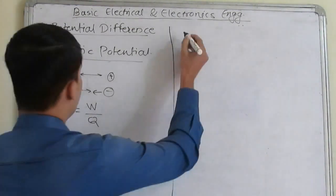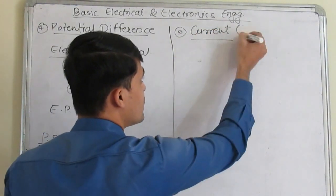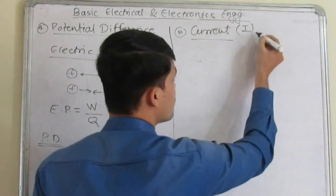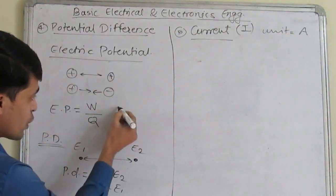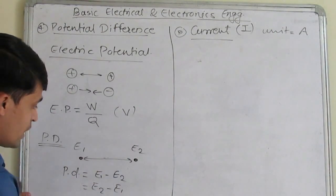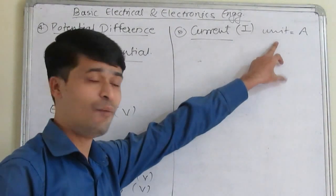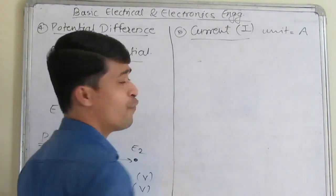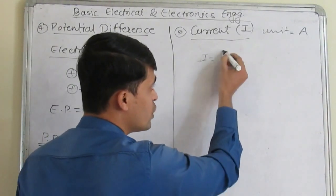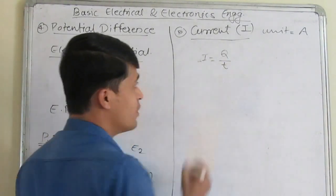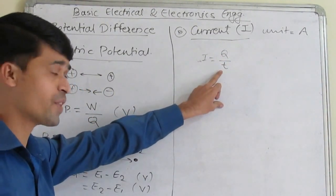Now we will see the current. What is current? Current is represented by I, and the unit of current is ampere. The unit of electric potential is volt, and also for the potential difference it is volt. Current is simply the flow of electrons — the rate of flow of electrons. So I is equal to Q upon T, the rate of flow of charge particles per unit time. It is the current.